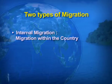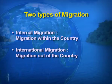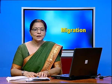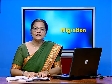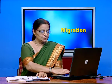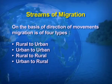We now talk about the two types of migration: internal migration and international migration. Internal migration is movement which takes place within the country only. International migration is when people migrate out of the country.